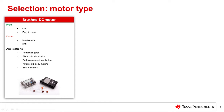BDC motors are found in many solutions such as household applications like gate openers or electronic locks, consumer products such as battery-powered robotic toys, automobile body applications like power seats, power windows, and power trunk lifts, shut-off valves found in gas meters and water meters, and insulin pumps along with many other medical applications.